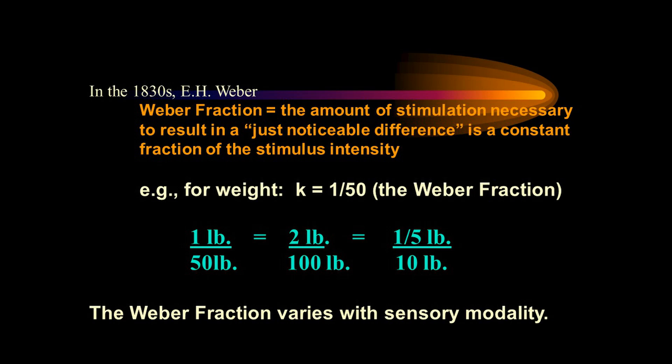Many students don't immediately understand what is meant here, but it's a very simple and useful concept. Think back to the student volunteer who was standing in front of class holding a 50-pound bag of Purina monkey chow, and I was adding pieces of paper to see if they detected the difference — whether there was a JND, a just noticeable difference. This has been tested, and we know that one pound of weight needs to be added to the 50 pounds you're holding for the just noticeable difference to occur — for you to say yes, it got heavier 50% of the time. So one pound over 50 pounds is a Weber fraction.